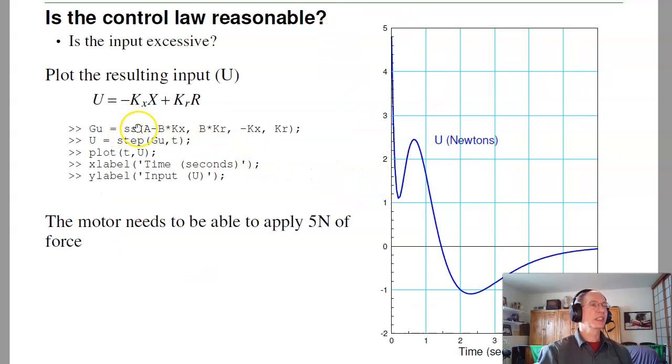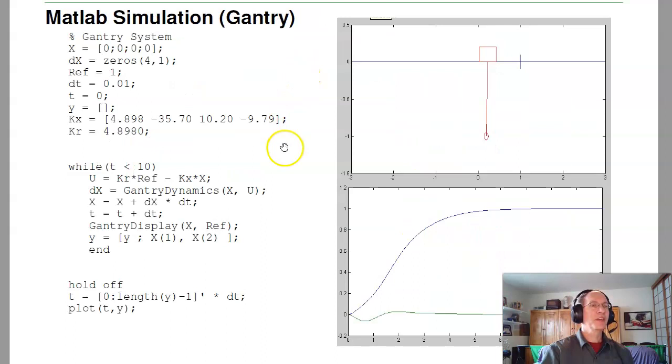If I look at the input, instead of making the C and D matrix equal to minus kx and kr, I'm now looking at u. The input is about 5. As long as I can have a force of 5 newtons, my control law can do it. If I now want to go to the nonlinear simulation, I just take the same feedback gains and apply it. And here's the response.